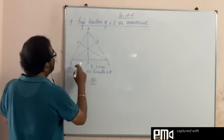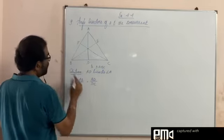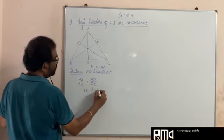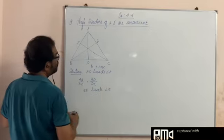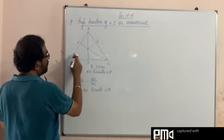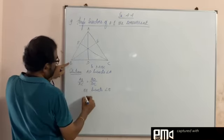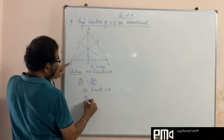Then we say that BE bisects angle B. So here BC by AB is equal to CE by EA.